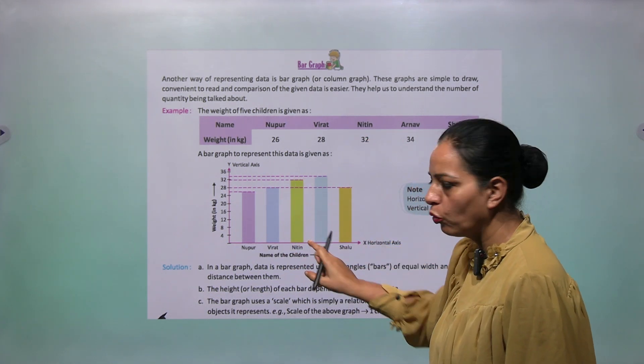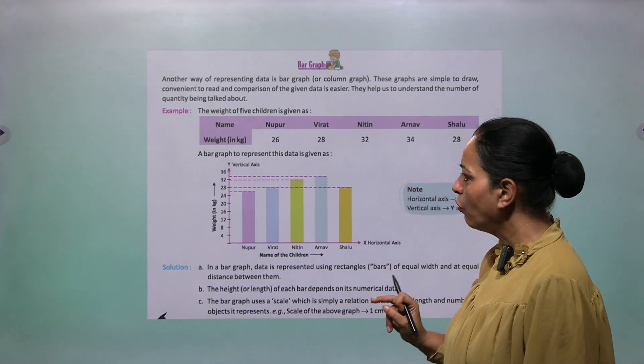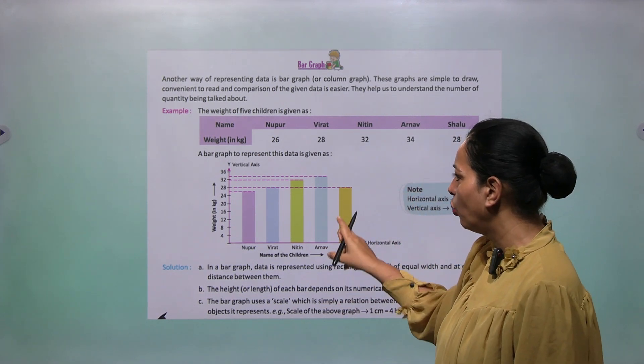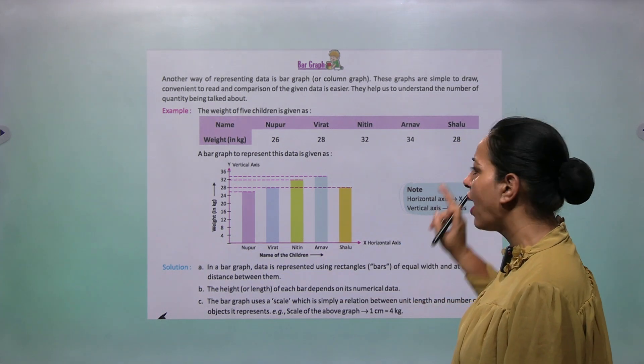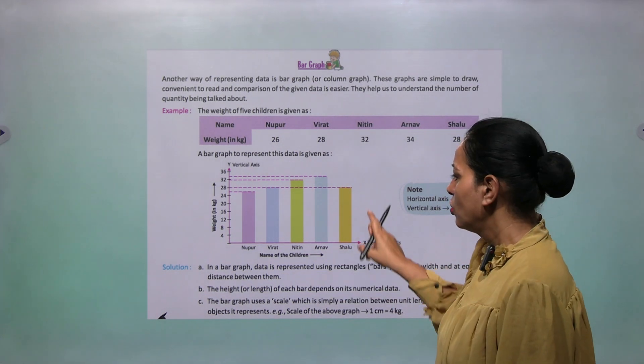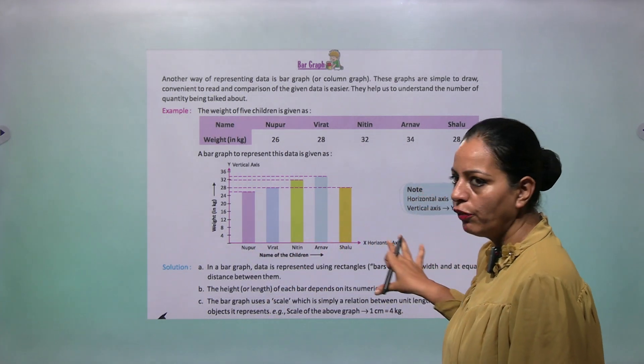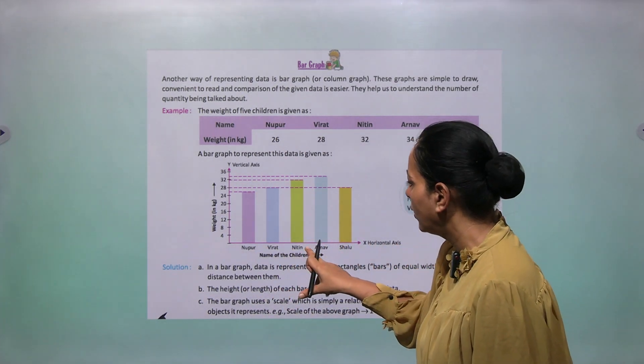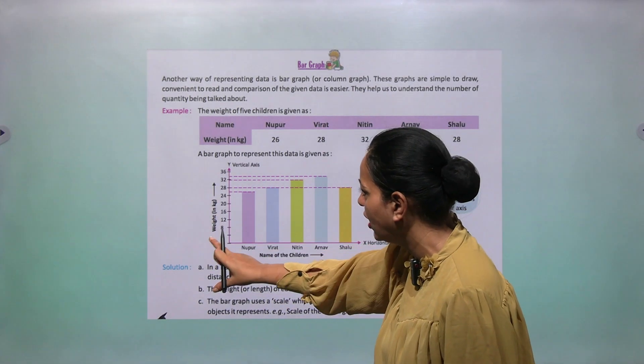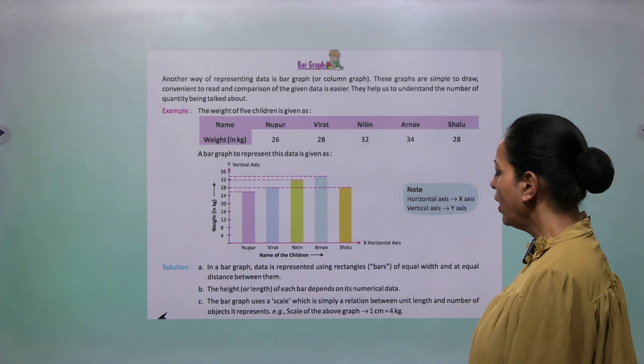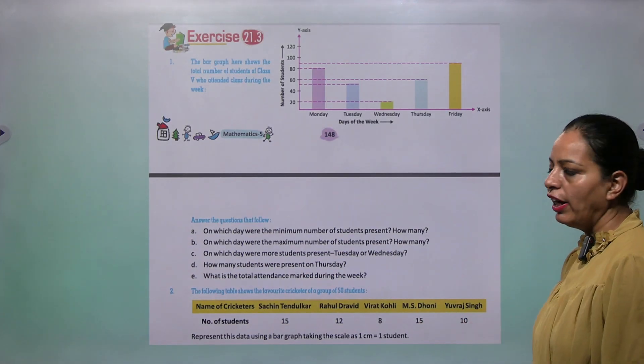The next is 34. 34 is between 32 and 36. Correspondingly draw. And then the last is 28. And write here full information: Nupur, Virat, Nitin, Arnav, Shalu - name of the children. And here weight in kg. This is the bar graph. So same, you can try 21.3 exercise on your own.